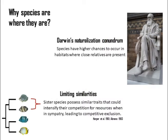According to Darwin's Naturalization Conundrum, species have higher chances to occur in habitats where close relatives are present. Two closely-related species tend to have similar traits that could intensify competition for resources when in sympatry. This could lead to competitive exclusion at a habitat scale.